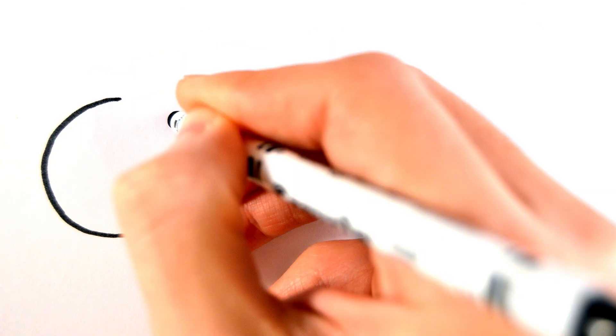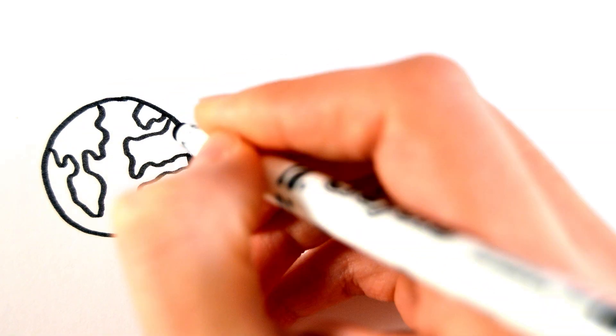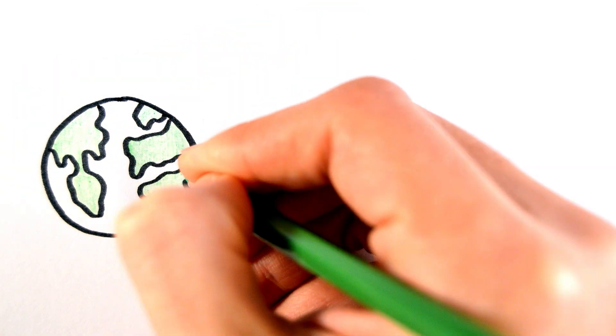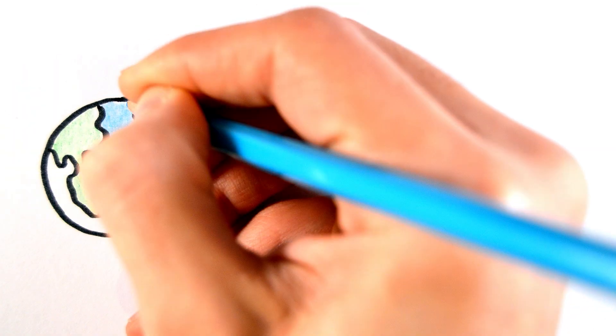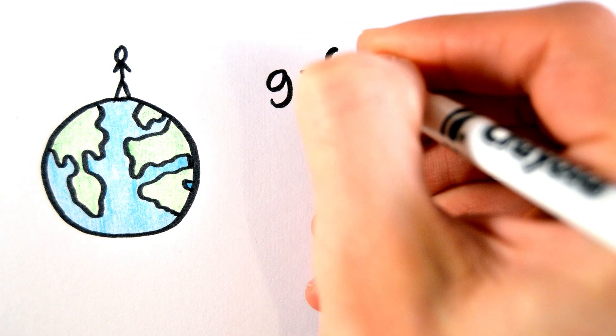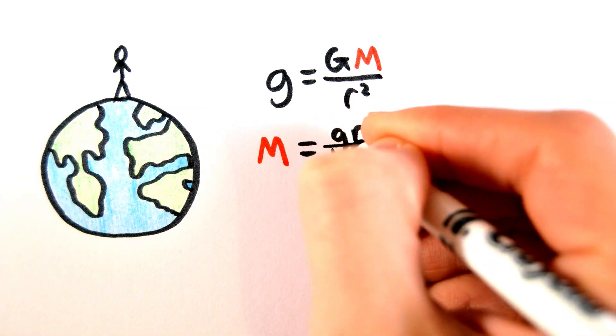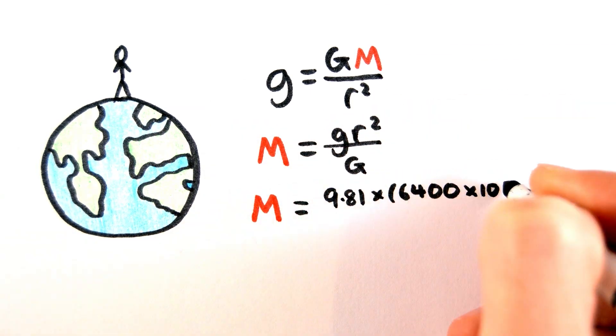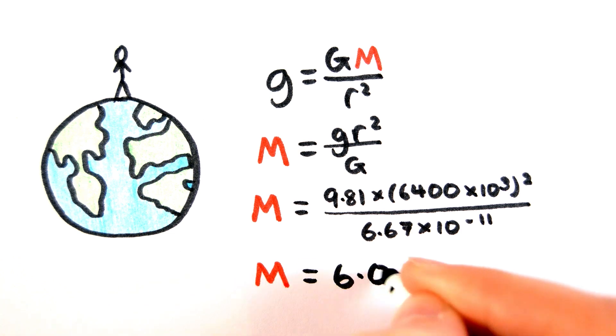This formula can be used to work out the masses of celestial bodies. For example, given that the gravitational field strength on the Earth's surface is 9.81 newtons per kilogram and the radius of the Earth is 6400 kilometers, we can work out the mass of the Earth to be 6.02 times 10 to the 24 kilograms.